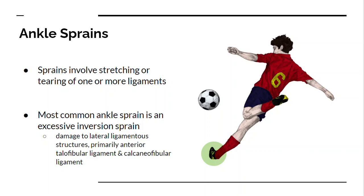Ankle sprains involve stretching or tearing one or more of the ligaments that protect or limit motion in the frontal plane of your ankle joint. The most common ankle sprain is excessive inversion, as we see in this picture.